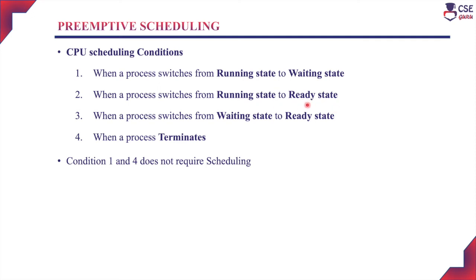The second condition is when a process switches from the running state to the ready state. During process execution, if any interrupt occurs, the process switches from running to ready. Alternatively, if I/O service is required, the process switches from ready to waiting, and once I/O service completes it returns to running. When a process switches from running to ready, CPU scheduling is required.